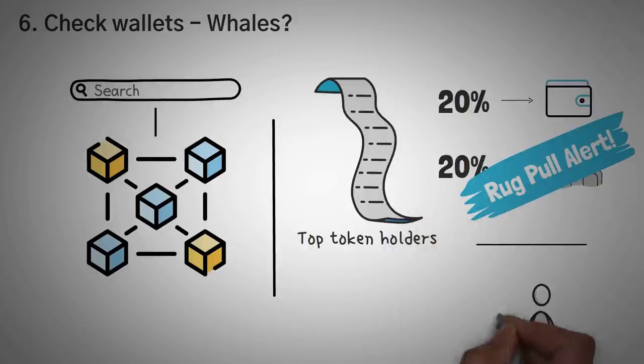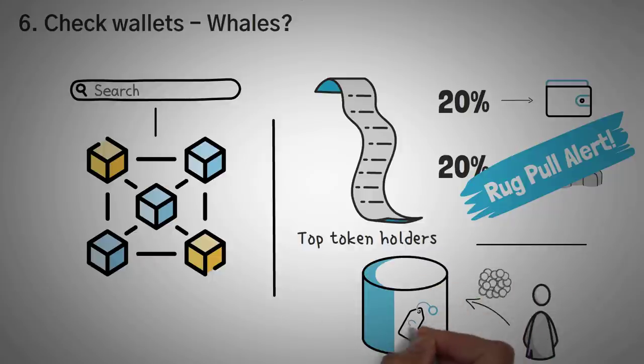The idea here is that one person could sell all of their tokens, which is a large majority of the tokens, and crash the price. This is actually probably the easiest way to spot a rug pull.